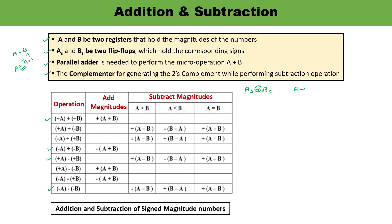If number A is positive and number B is also positive, both signs are 0, and the XOR of 0 and 0 is 0. If A is negative and B is also negative — both are 1 — the XOR is also 0. When the XOR of AS and BS is 0, whatever operation is required will be performed: if addition is needed, addition will be done; if subtraction is required, subtraction will be done.